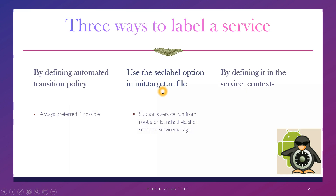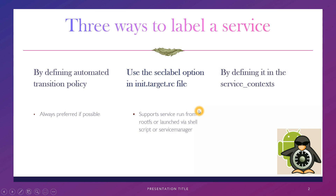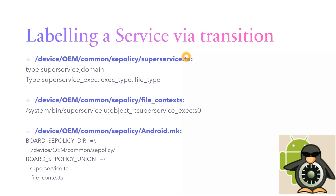The third one is by defining it in the service context. If you are writing the core service or native service, always the first option is preferred — that is by defining the transition policy. If you are launching your service via shell or writing it as root, then the second or third option are preferred. Let's go in detail for each of these.